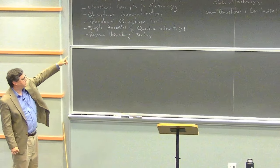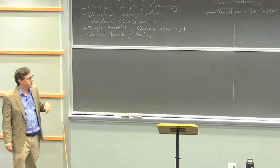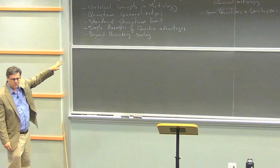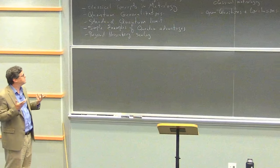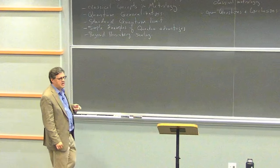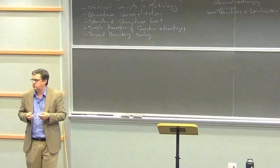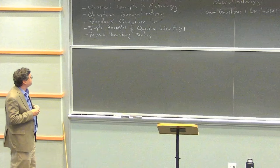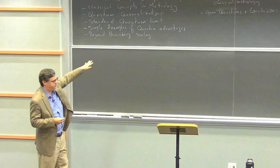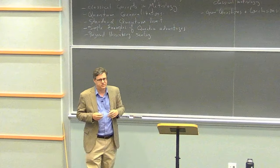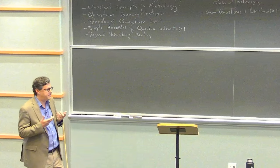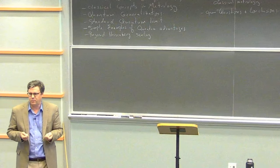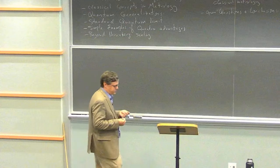My name is Andrew Jordan. I'm currently at Chapman University, just south of here in Orange County. I was for 15 years at the University of Rochester, and I was so addicted to the Southern California climate I moved back. I'll begin with some classical concepts in metrology, then talk about quantum generalizations and the standard quantum limit, and then some advantages. The core idea of quantum metrology is using quantum mechanics as a new kind of physics to gain metrological advantage. I'll also talk about Heisenberg scaling, how to exceed it, and how working to discover quantum advantages has uncovered classical metrological advantages people have overlooked.